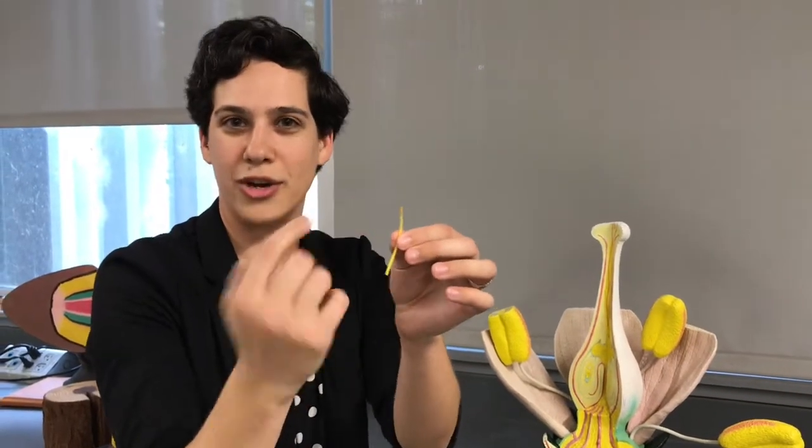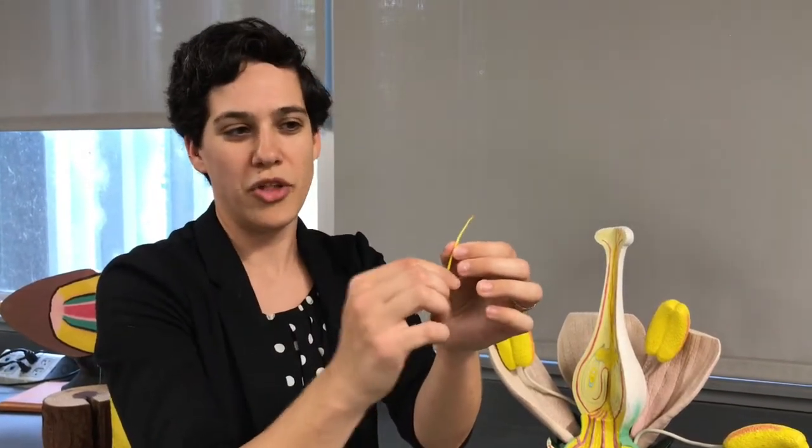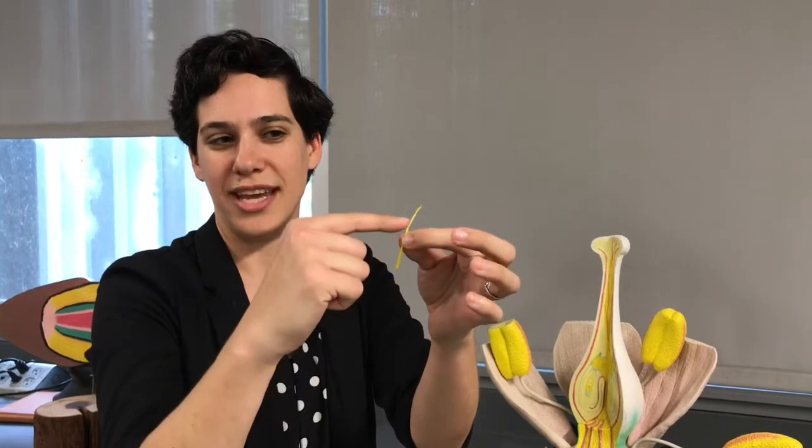That's where you find the pollen grains in the flower. The long stalk attached to the anther is called the filament. And together, the anther and the filament make a stamen.